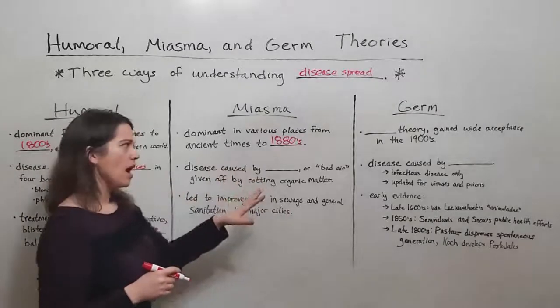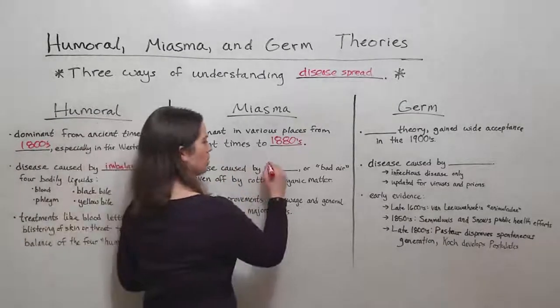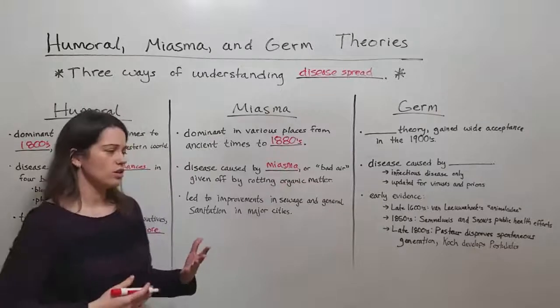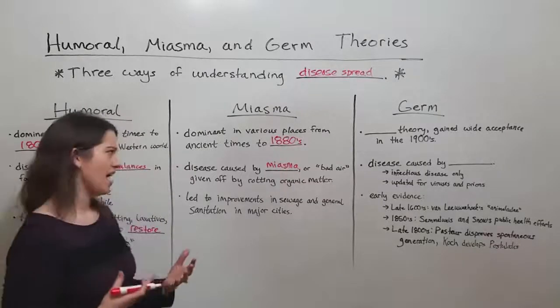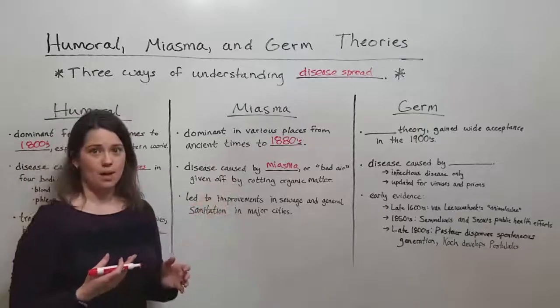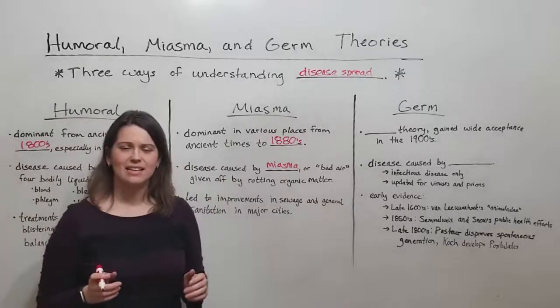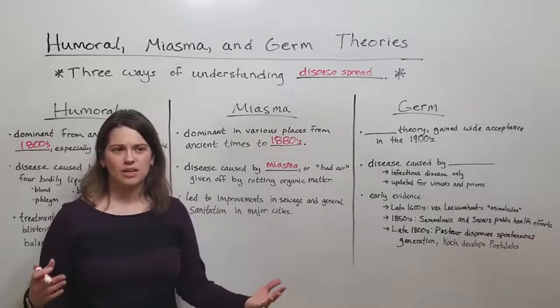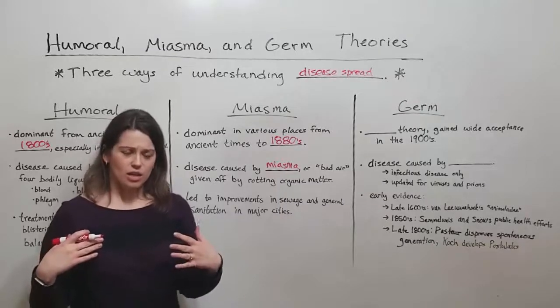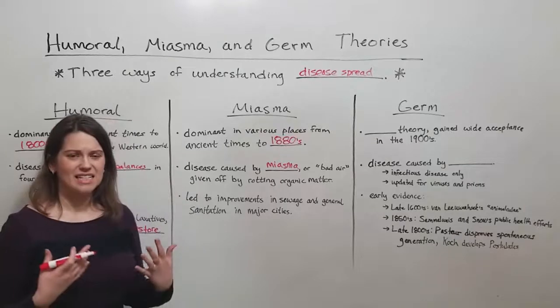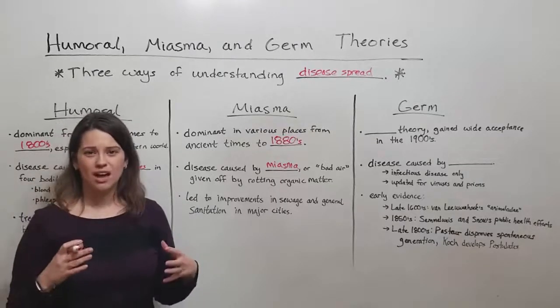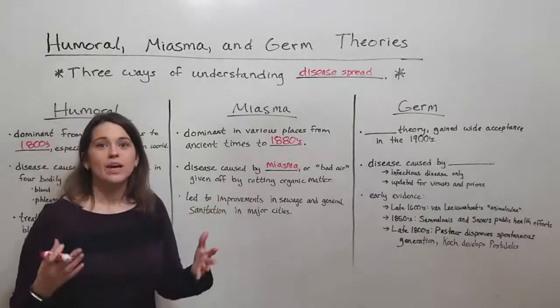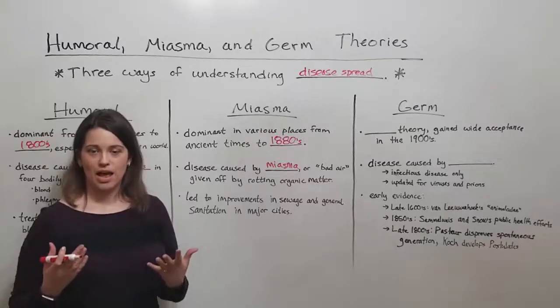Miasma theory held that disease was caused by something called miasma, which was basically bad air, sort of filthy, stinky, gross air given off by rotting organic matter. And you can kind of see how this made sense. If there's a lot of rotting dead bodies, dead mice in the road, human waste and feces that make things smell really bad, a lot of unwashed bodies crammed together in cities that stink, those are all situations where there's a lot of disease spread as well.